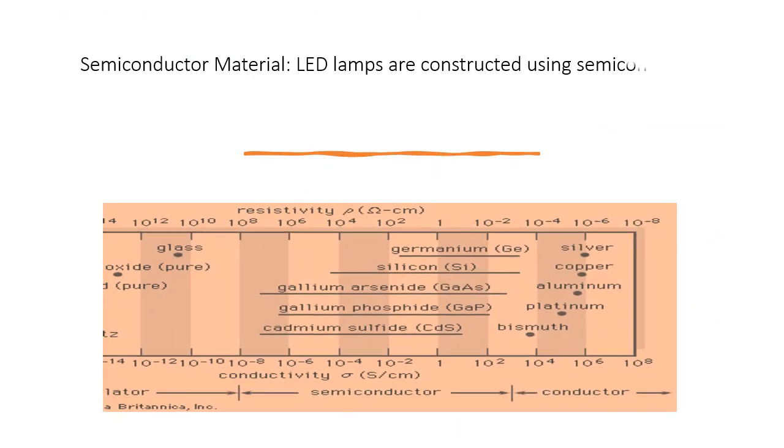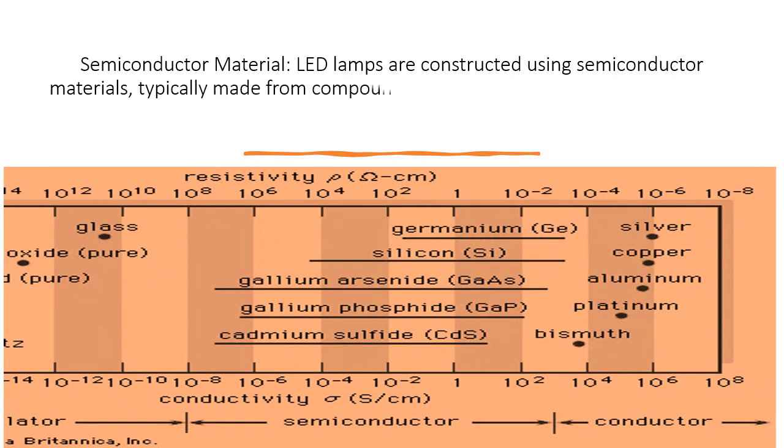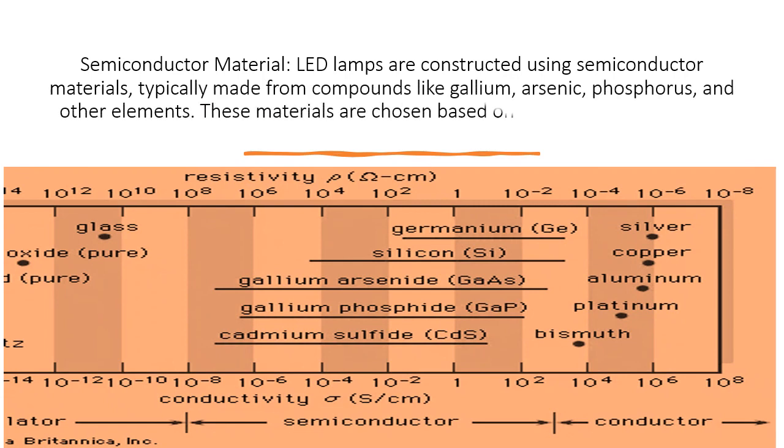Semiconductor material: LED lamps are constructed using semiconductor materials, typically made from compounds like gallium, arsenic, phosphorus, and other elements. These materials are chosen based on their ability to emit light when subjected to electric current.